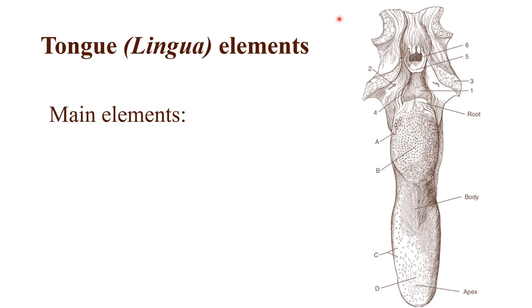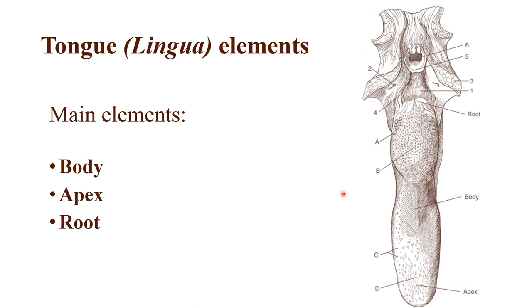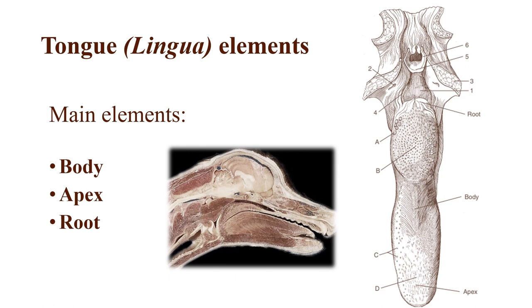These are the main elements: first we have the body, which is the middle and longest part. Then we have the apex, which is the free end of the tongue, and the root that attaches to the bottom of the mouth.